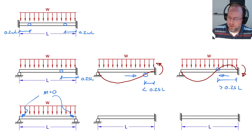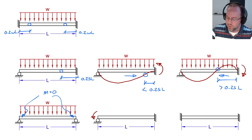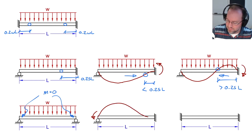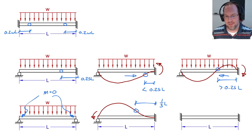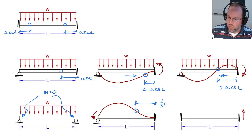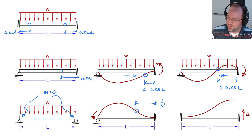Two additional special cases: if you have end rotation only at one side — no displacements, no rotation at the other end, and no load along the length — the inflection point is always exactly one third of the span away from the fixed end. That is an exact answer. Another exact case: if you have deflection only on one side and no rotation on either end, the deflected shape forms an S-curve, and the inflection point is always exactly at mid-span, 0.5L.